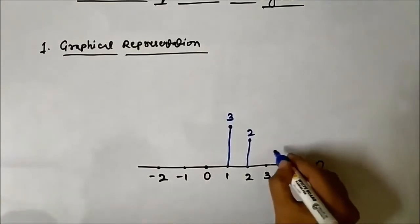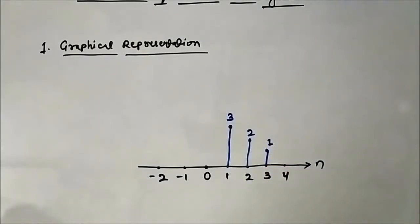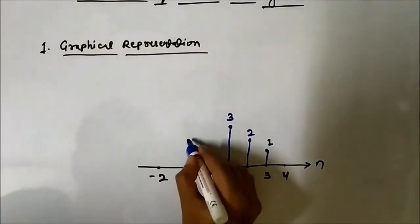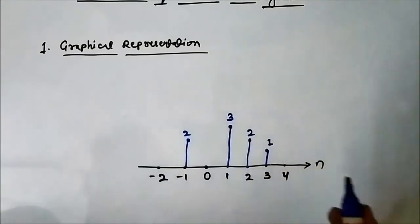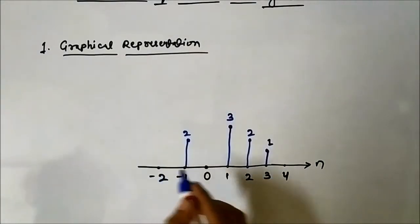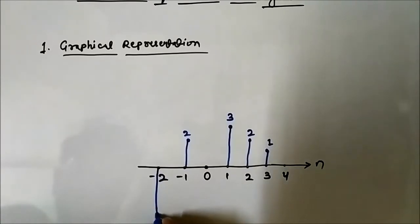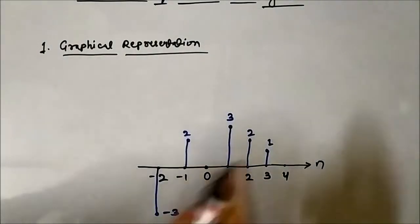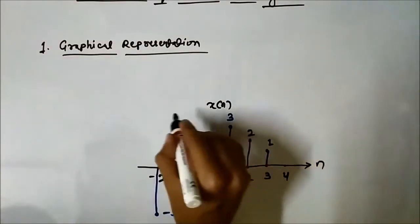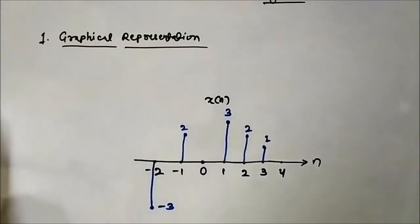At instant 3 the magnitude is 1. Similarly, at minus 1 the magnitude of the signal is 2, so again a vertical line of magnitude 2. At minus 2 the magnitude of the signal is minus 3, so it will be in the negative direction, minus 3. This is the discrete time domain n, and these are the discrete time signal magnitudes at the specific sampling instances — x(n).